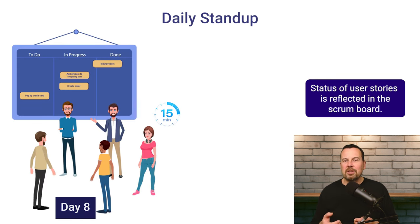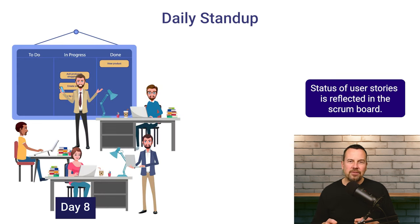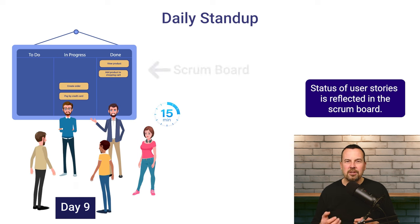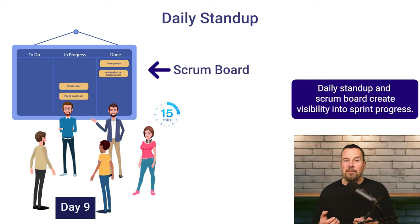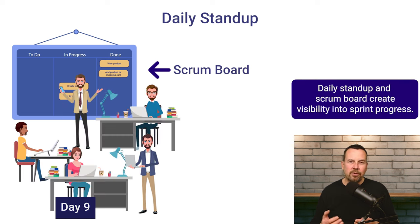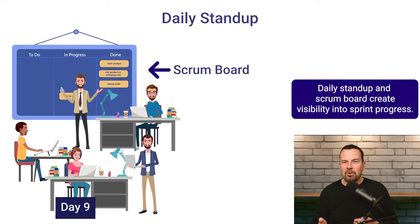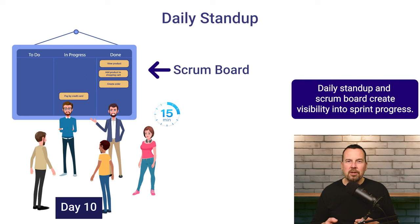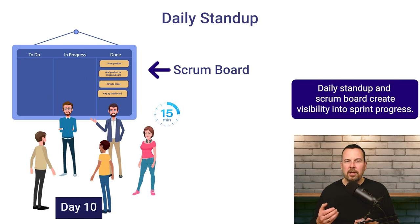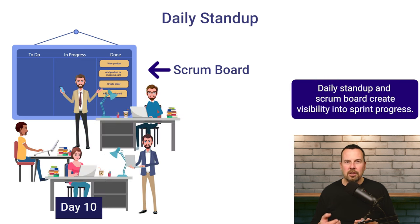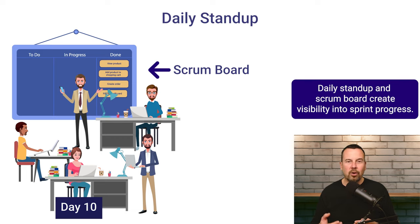As stories progress towards completion, their status is reflected on the project's Scrum board. That enables anyone from the team to tell which stories have been completed, which ones are in progress, and which ones are still waiting to be worked on.